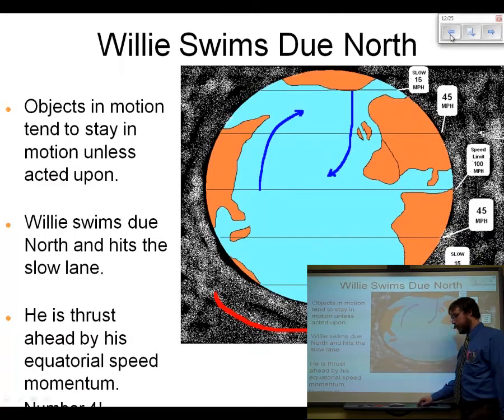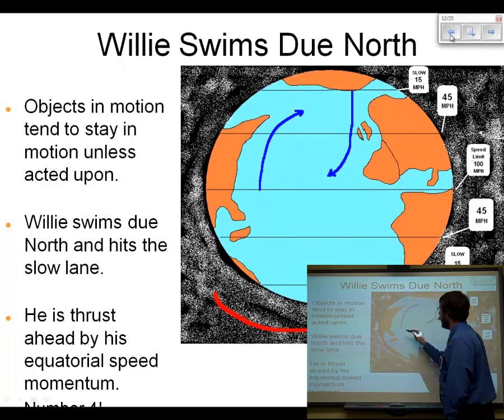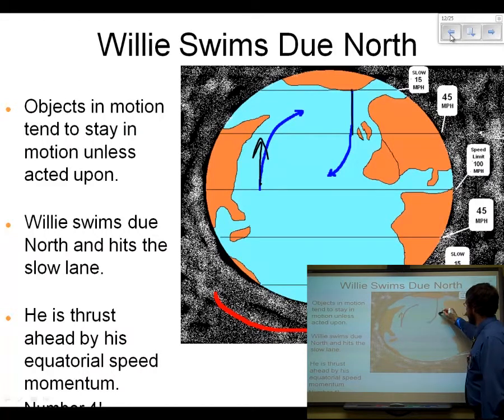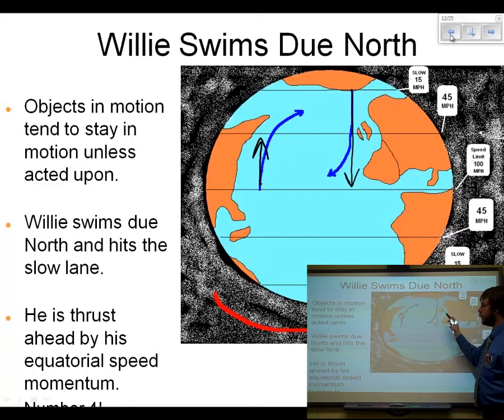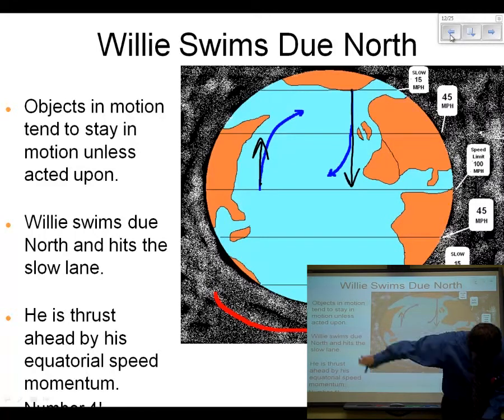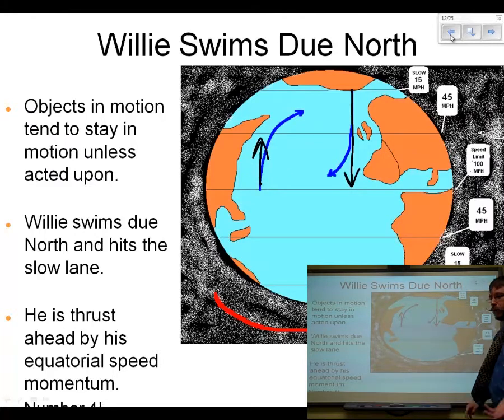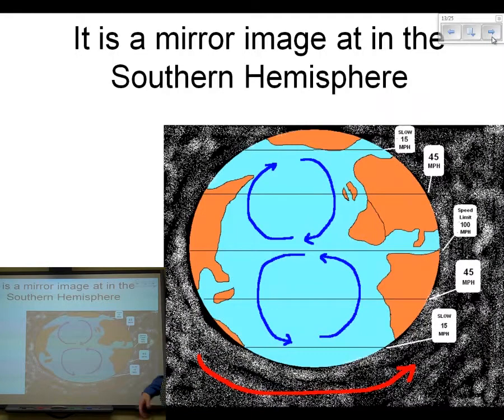So even though he swims due north, he hits an area where the earth is not moving as fast, and he starts to pull away to it because he's got that same momentum from the equator. So there's Willie swimming, and you'll notice that in both times, if Willie's going this way, he's deflected to his right. Up here when Willie was swimming south, heading this way, he's deflected again to his right. So any object in motion in the northern hemisphere always gets deflected to the right.